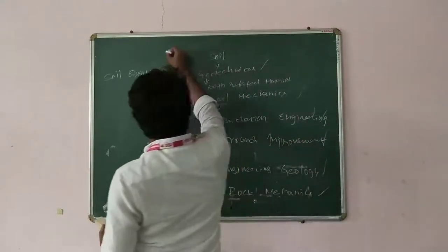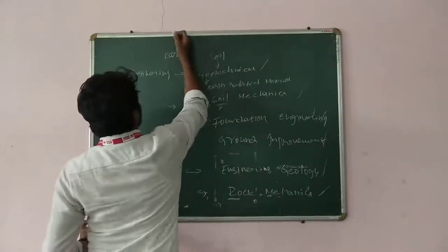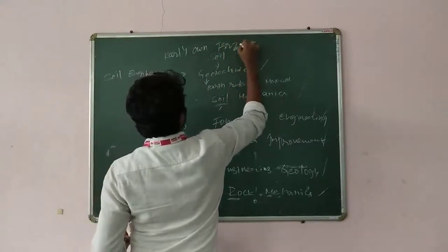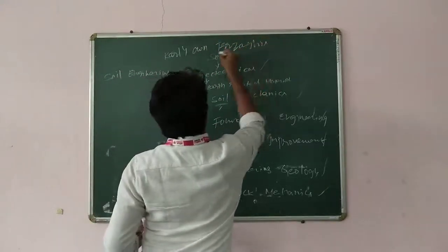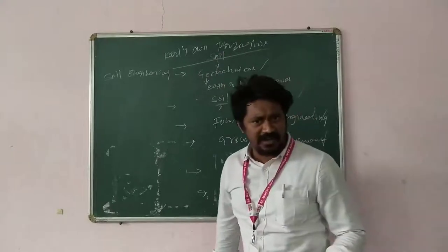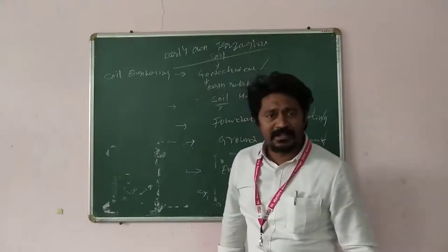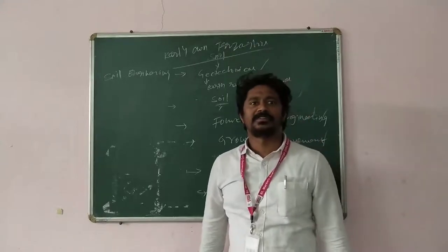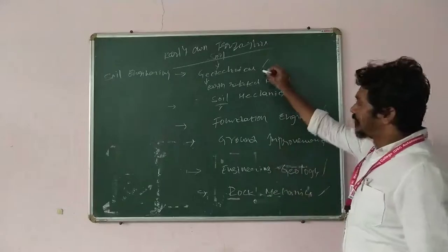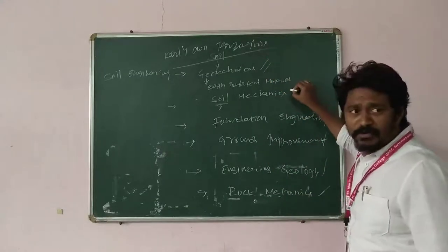According to Karl von Terzaghi, the father of soil mechanics, soil is nothing but naturally occurring unconsolidated surface of the earth material. After this definition, we go for soil mechanics. In soil mechanics, we know soil is these materials.